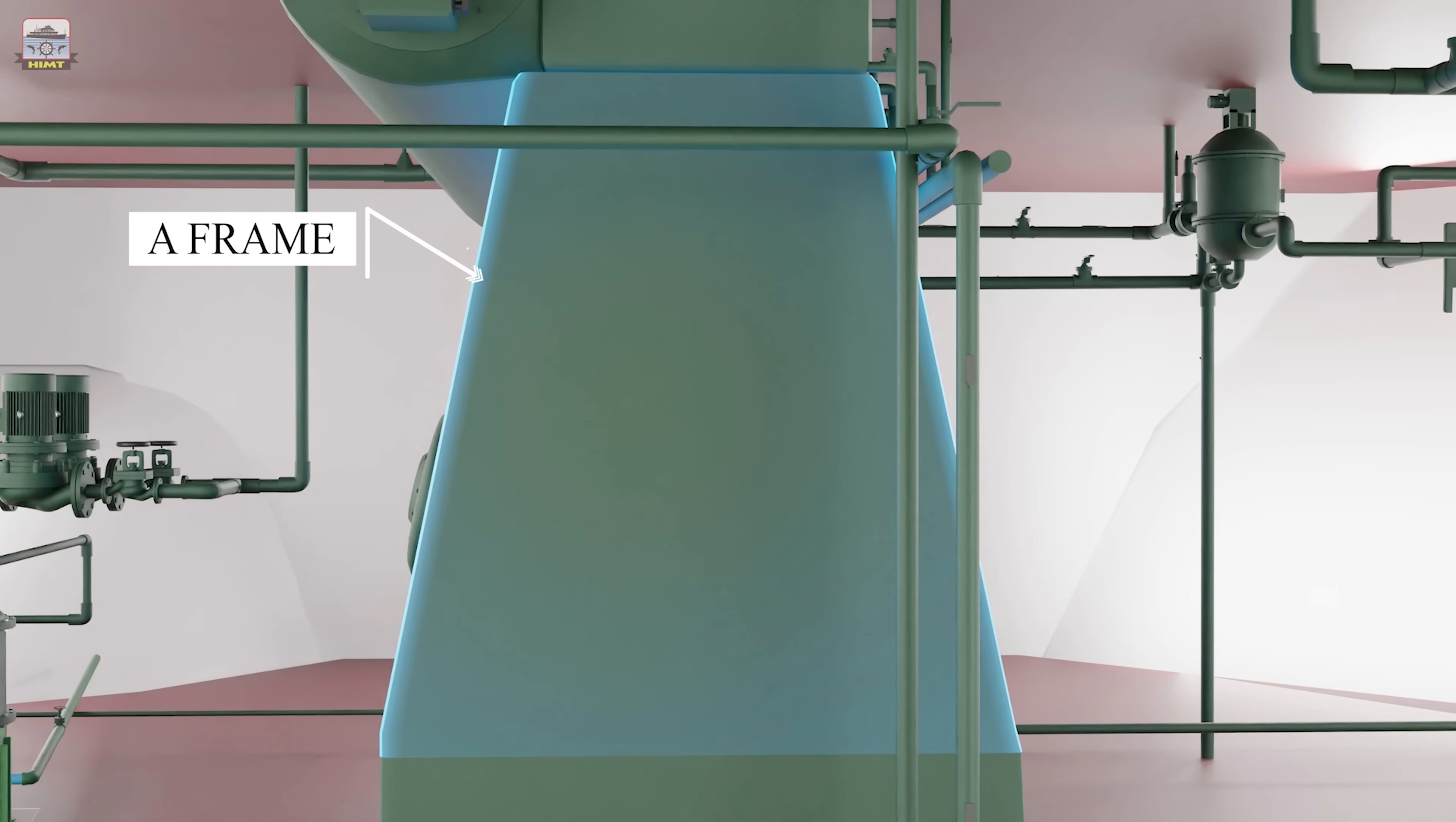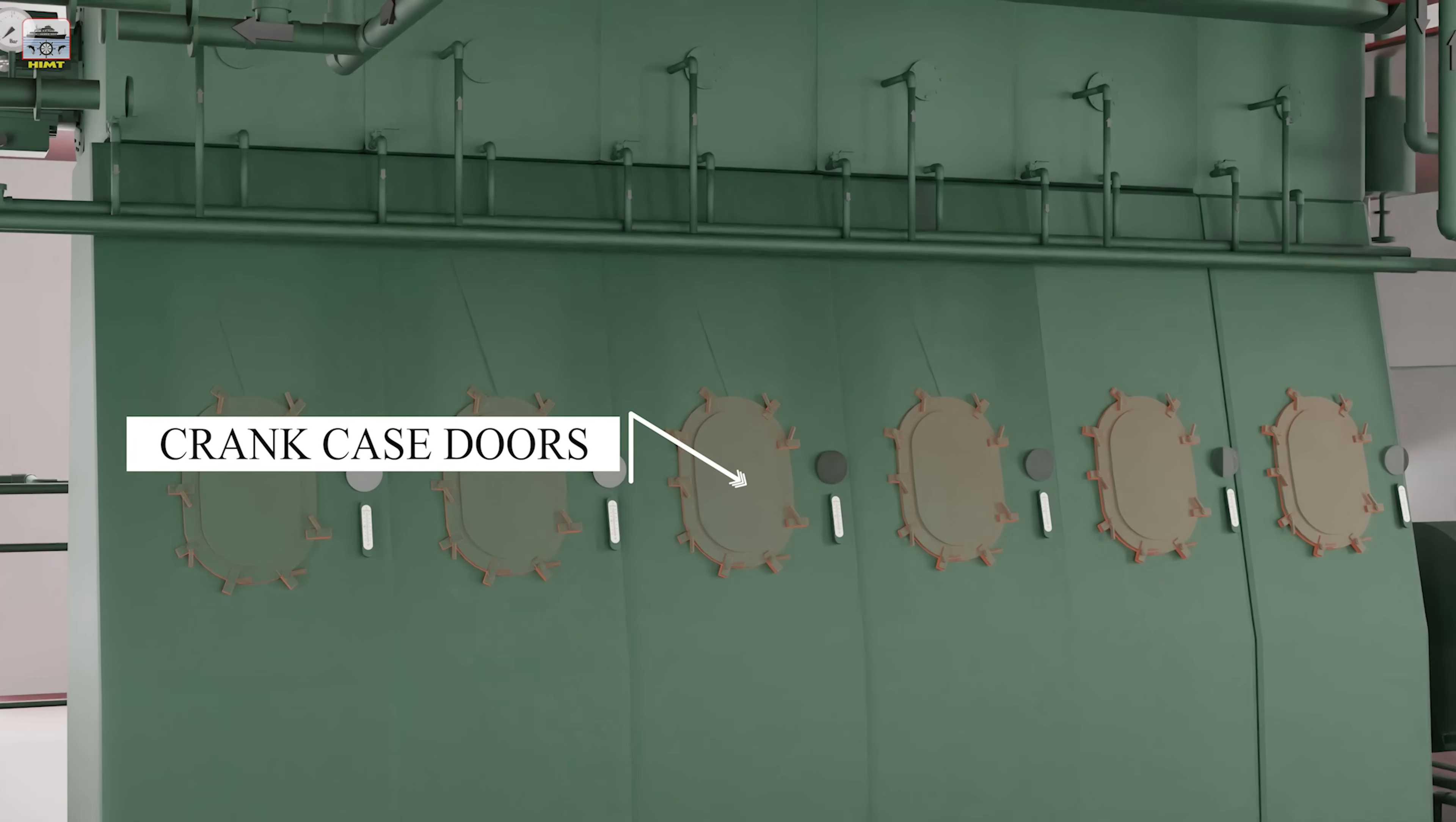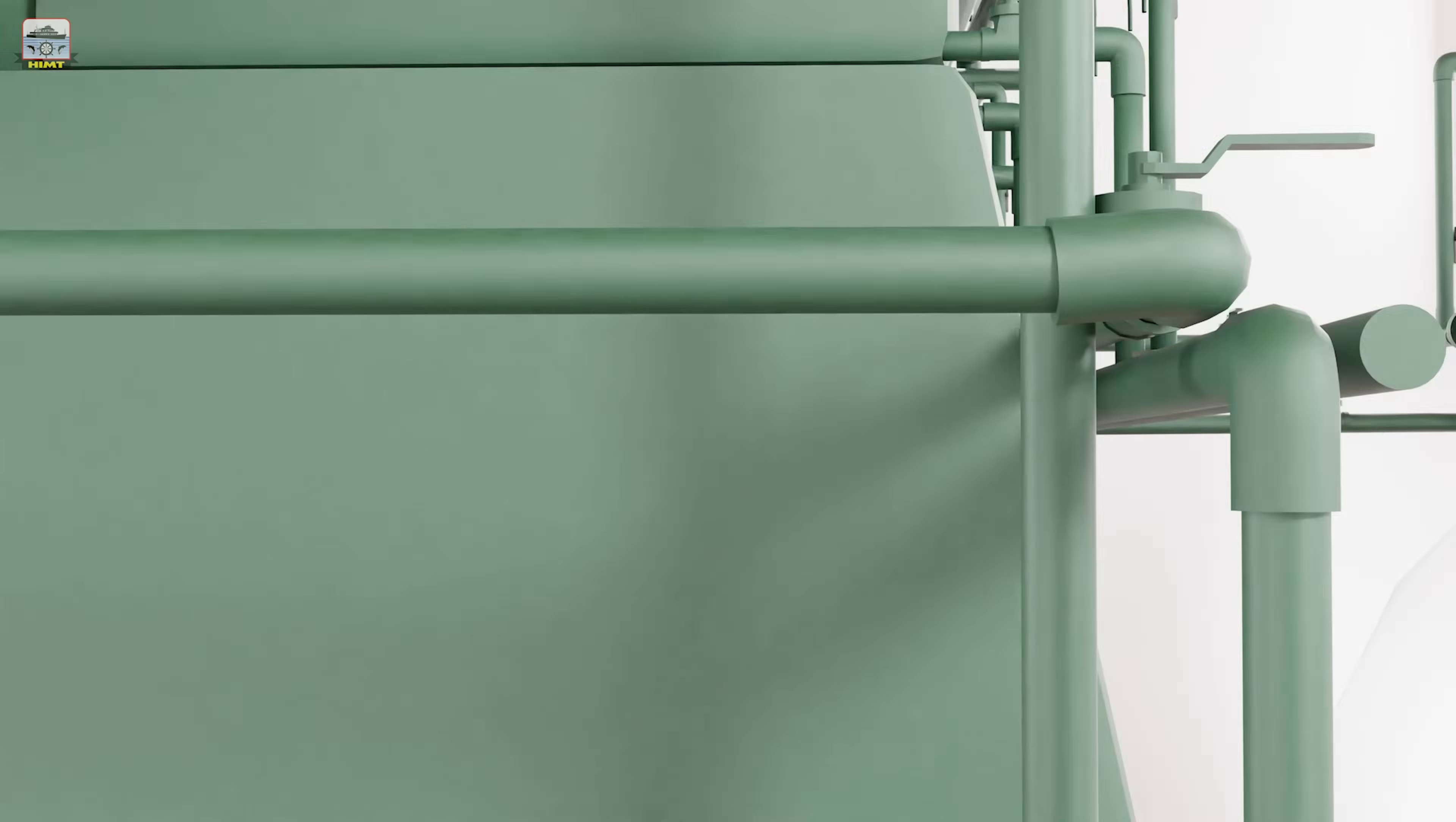This is the A-frame. It is a fabricated structure mounted on top of the bed plate. It carries the crosshead guides. It accommodates the crankcase doors and the crankcase relief valves. It also supports the cylinder block.